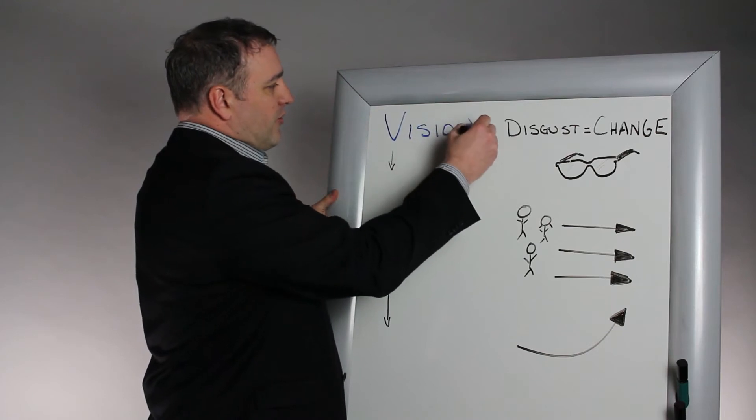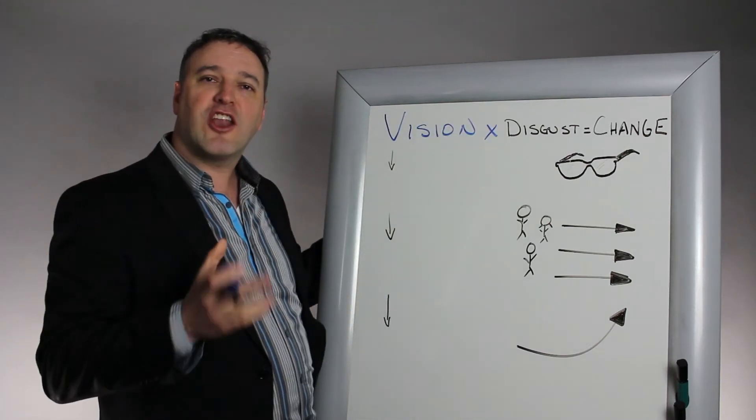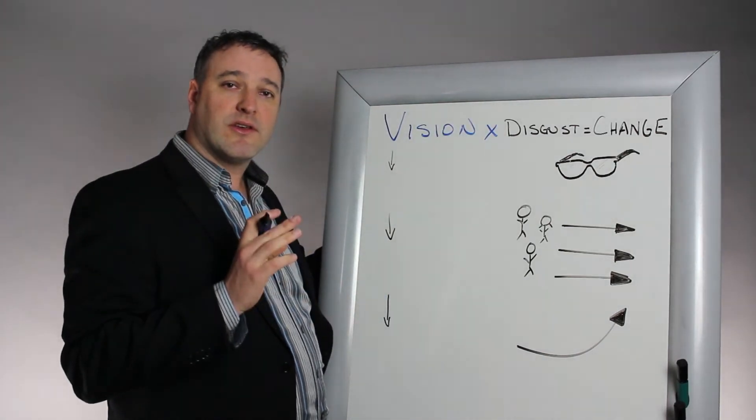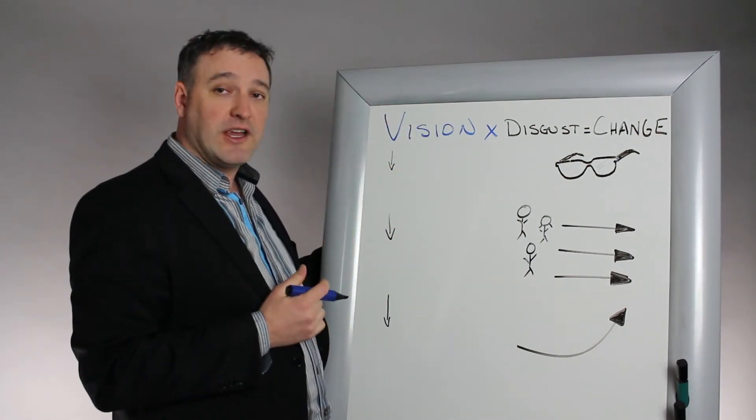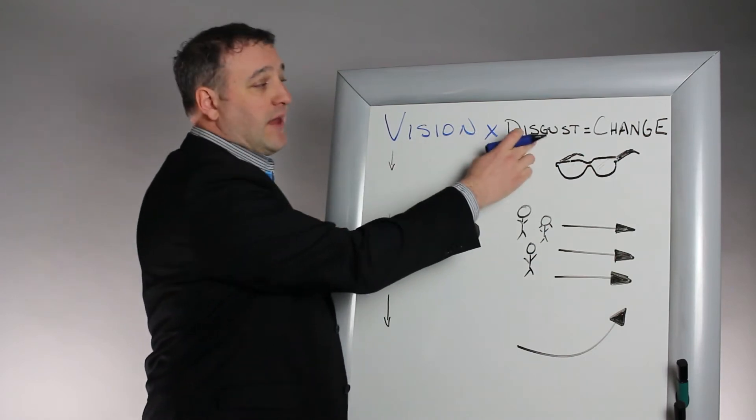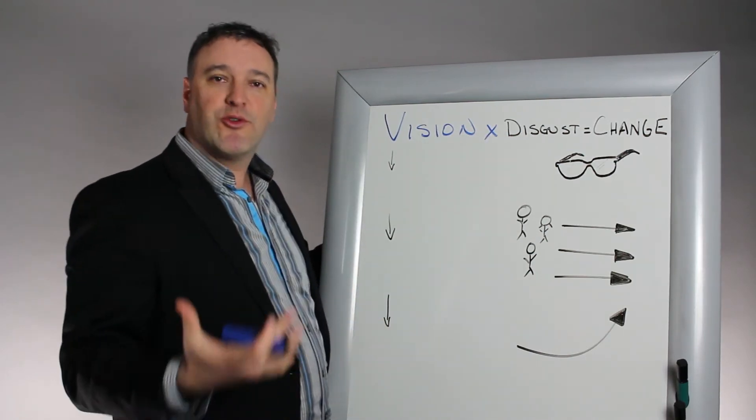I love this little equation I'm about to put up here. Because like I said, it's not enough to be disgusted with the present. You've got to create a vision for people to see what could be in the future to motivate them to change. So vision multiplied by the disgust for the present equals change.